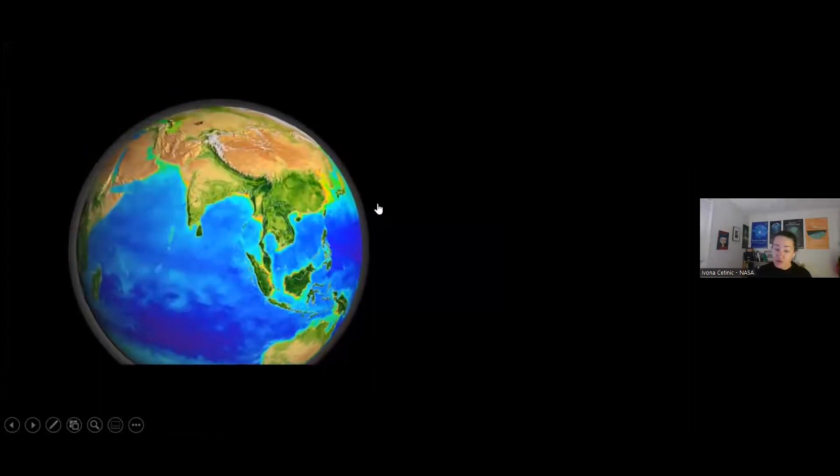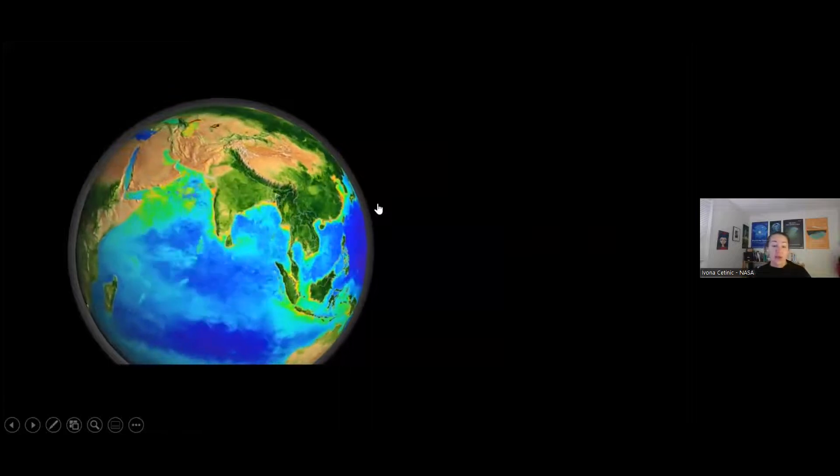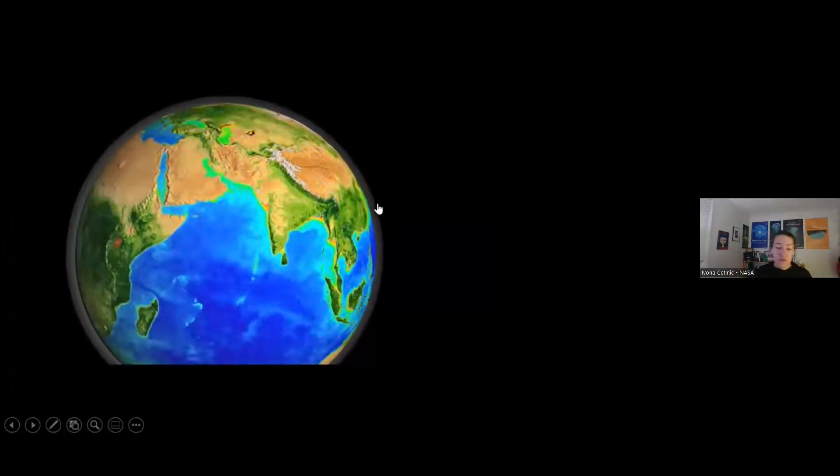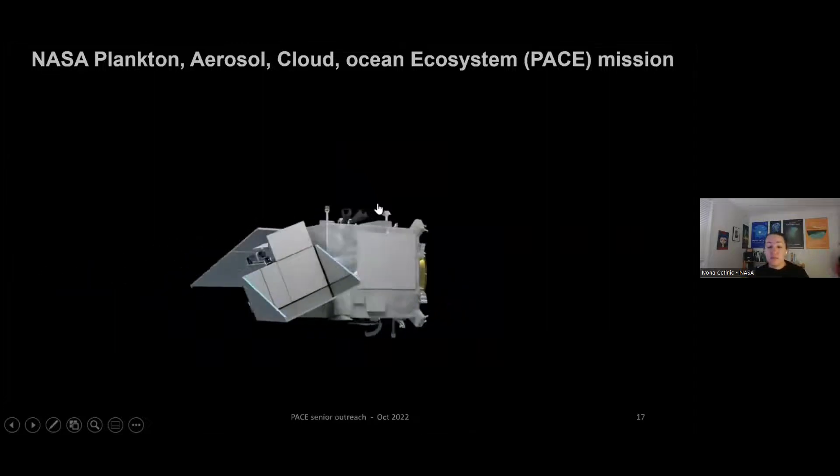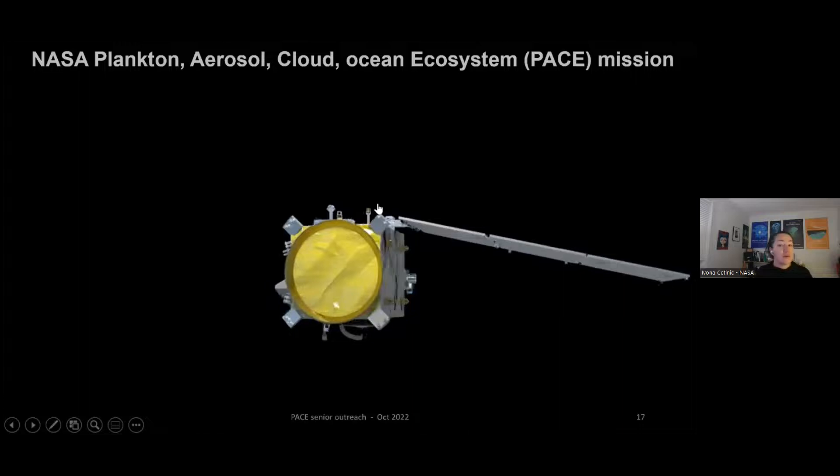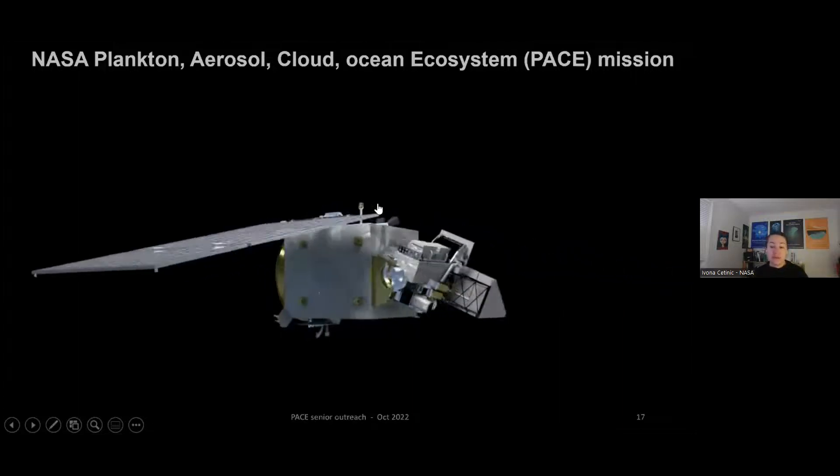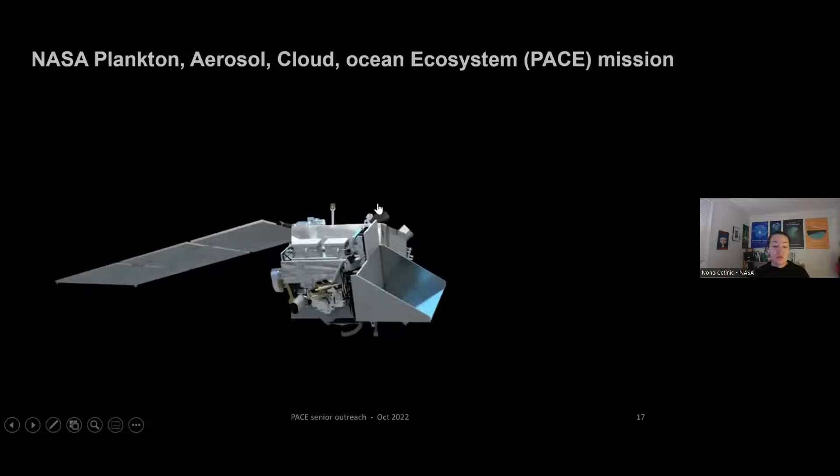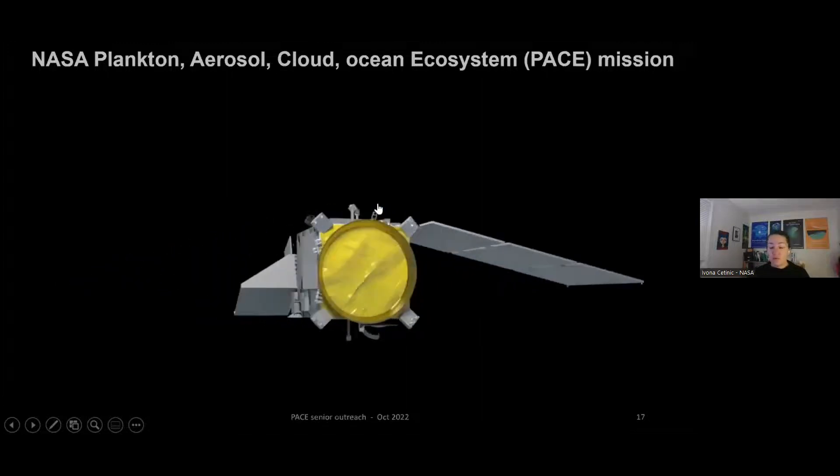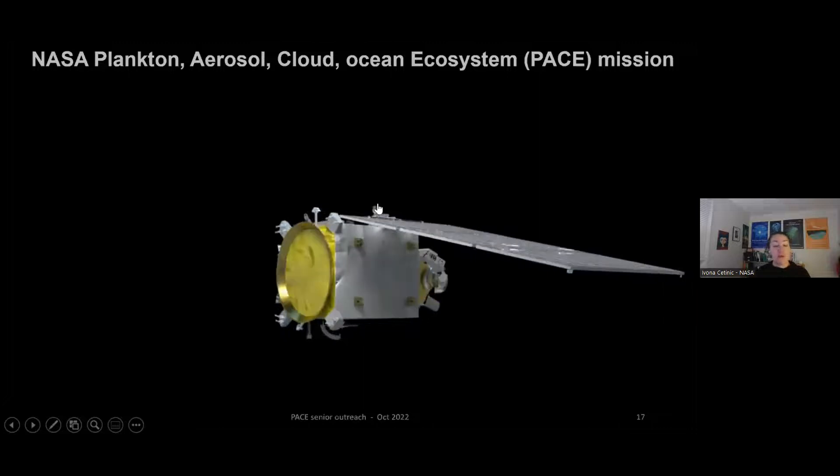So as I said, current ocean color satellites tell us how much phytoplankton there is. But they don't give us the beautiful diversity that I was talking about. And this is what PACE steps in. PACE stands for Plankton Aerosol Cloud and Ocean Ecosystem Mission. And this is NASA's upcoming mission. And it's going to be carrying, and I'm going to tell you slowly about it, three instruments. But one, most importantly, is going to be a radiometer.